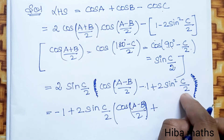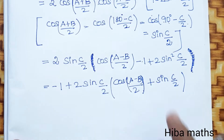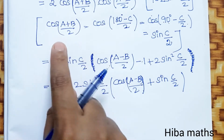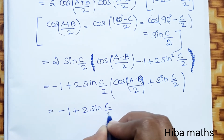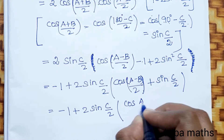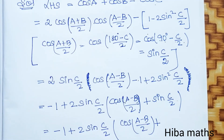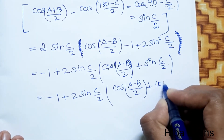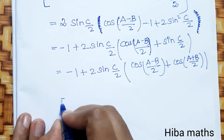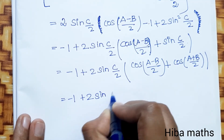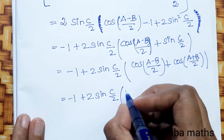Continuing: cos((A-B)/2) plus sin squared(C/2). We have sin(C/2) times cos((A+B)/2), giving us minus 1 plus 2 sin(C/2) times cos((A-B)/2) plus sin(C/2) times cos((A+B)/2). Next line: minus 1 plus 2 sin(C/2) times [cos((A-B)/2) plus cos((A+B)/2)] using the formula.